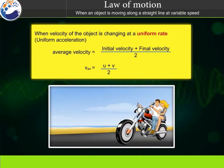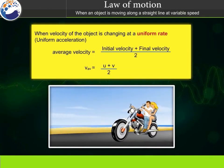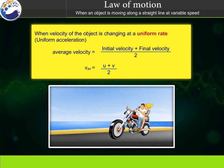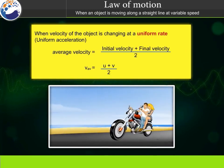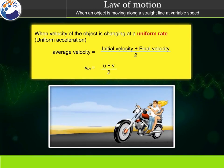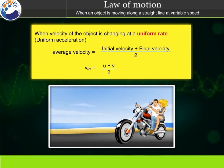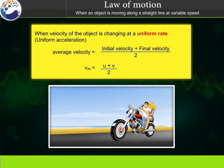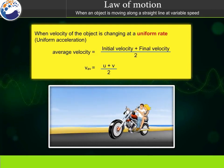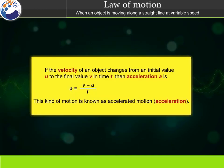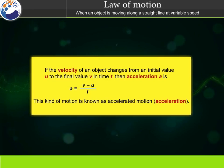When the velocity of an object is changing at a uniform rate, i.e. uniform acceleration, average velocity equals initial velocity plus final velocity divided by 2. If the velocity of an object changes from an initial value u to the final value v in time t, then acceleration a is defined accordingly.